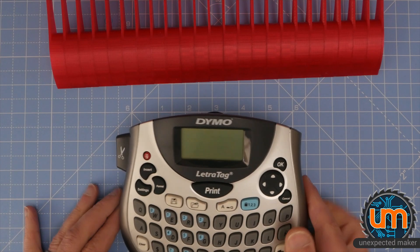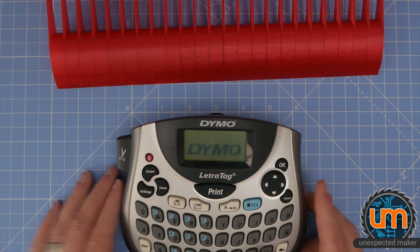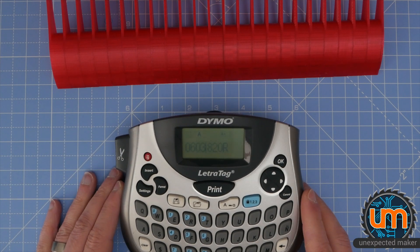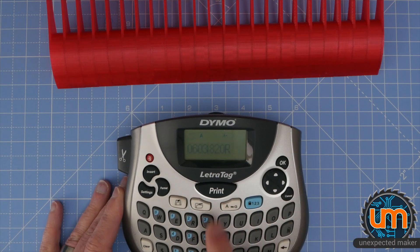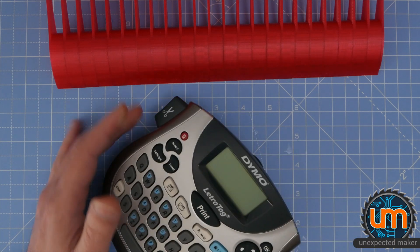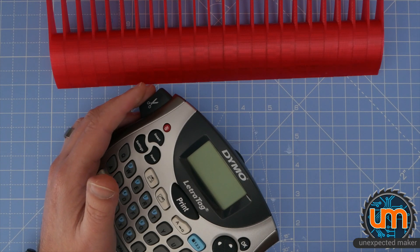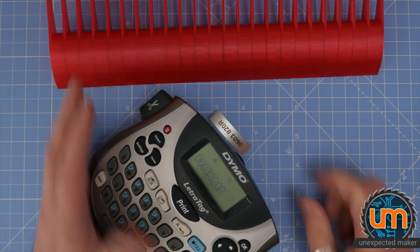Okay, so here's my Dymo label printer. Let's turn it on. I'm using what's called a metallic paper on this one. I've already got a label already in here. So if I just tilt the print, watch it come out.